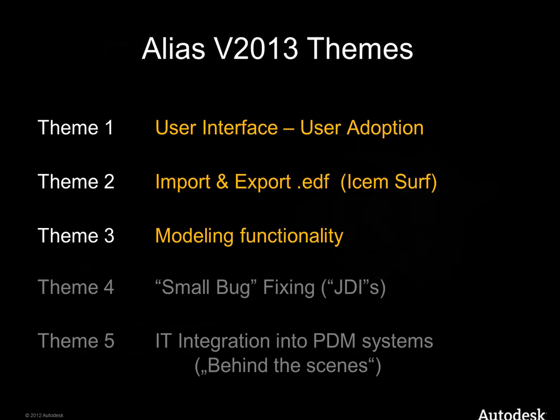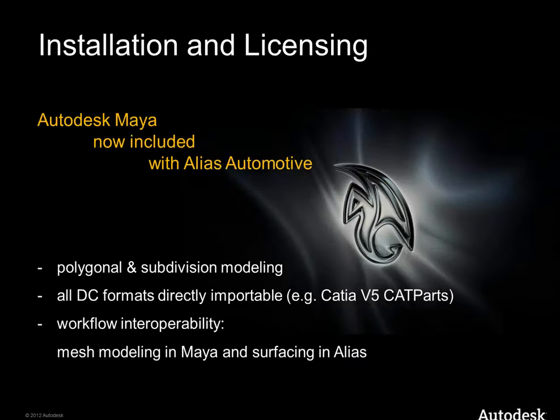Now jumping directly into the functions. There's one command about licensing. You know that Alias comes with three levels, three packages. There's a small Alias Design for industrial design, then we have the mid package Alias Surface, which you can do Class A surfacing with, as well as the largest, most expensive Alias Automotive version.